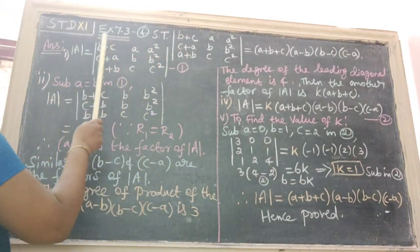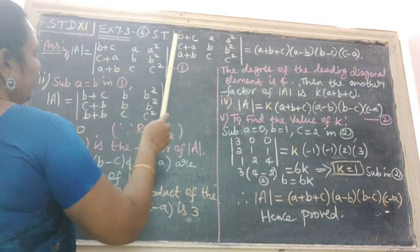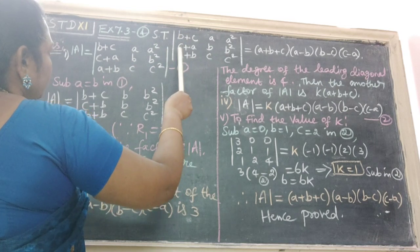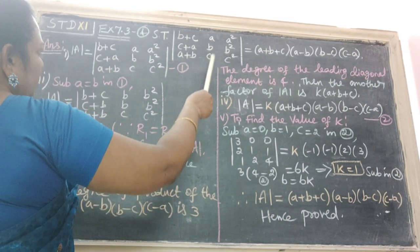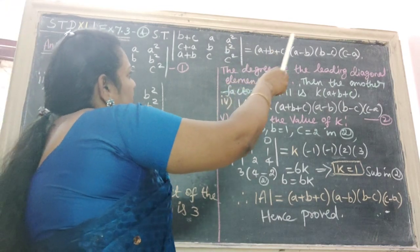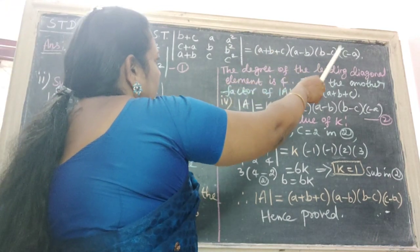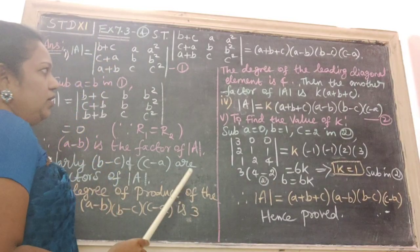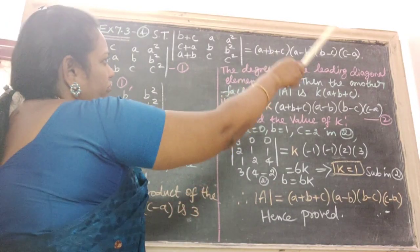Next problem, XI 7.3, fourth question. Show that determinant B plus C, C plus A, A plus B, A, B, C, A square, B square, C square equal to A plus B plus C into A minus B into B minus C into C minus A. Here there are four factors.